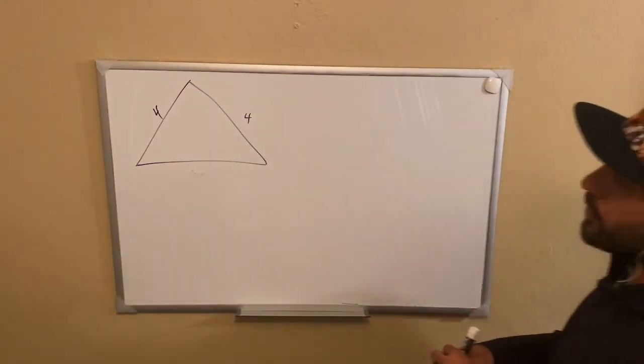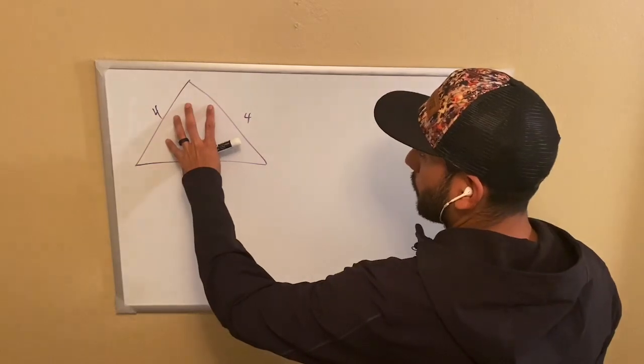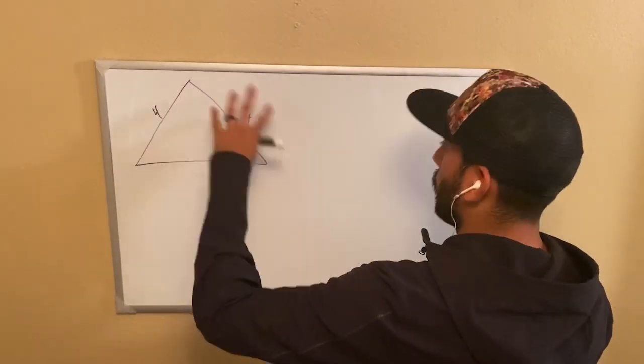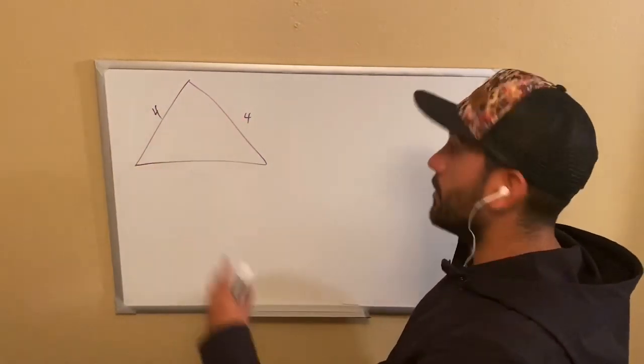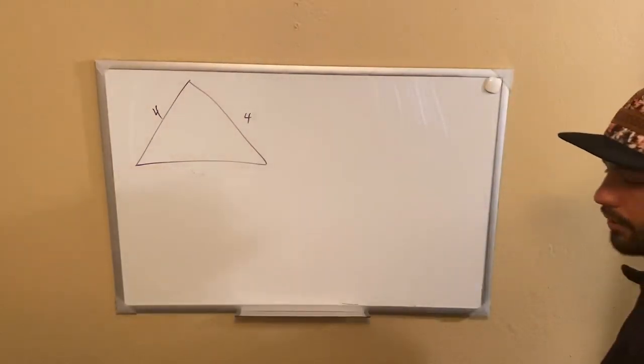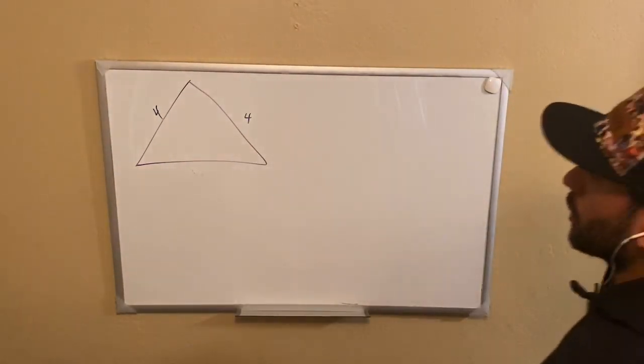So what we need to do is we need to find the area of this triangle, and if we can do that, we're just going to multiply this area by seven and find the entire area of the figure.